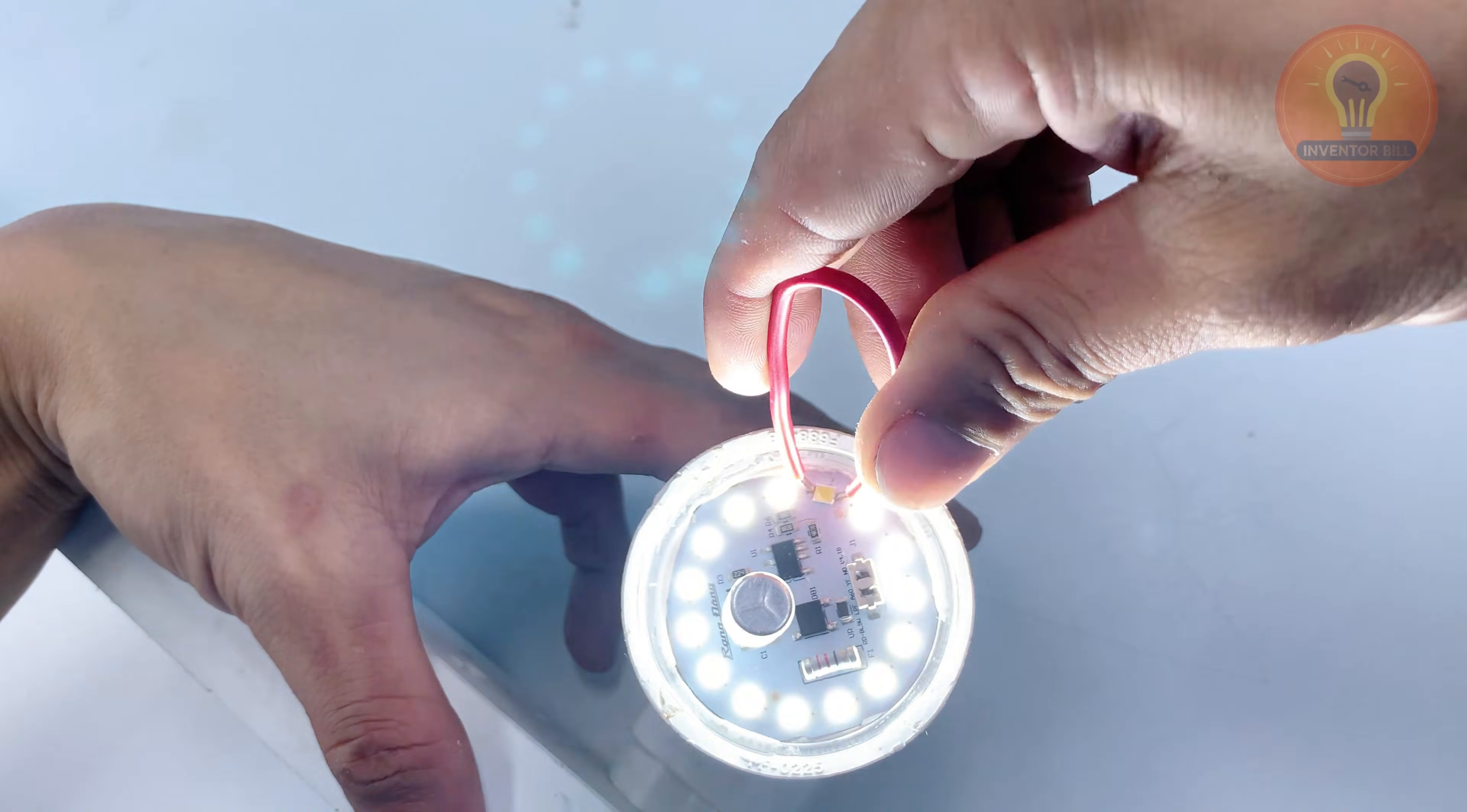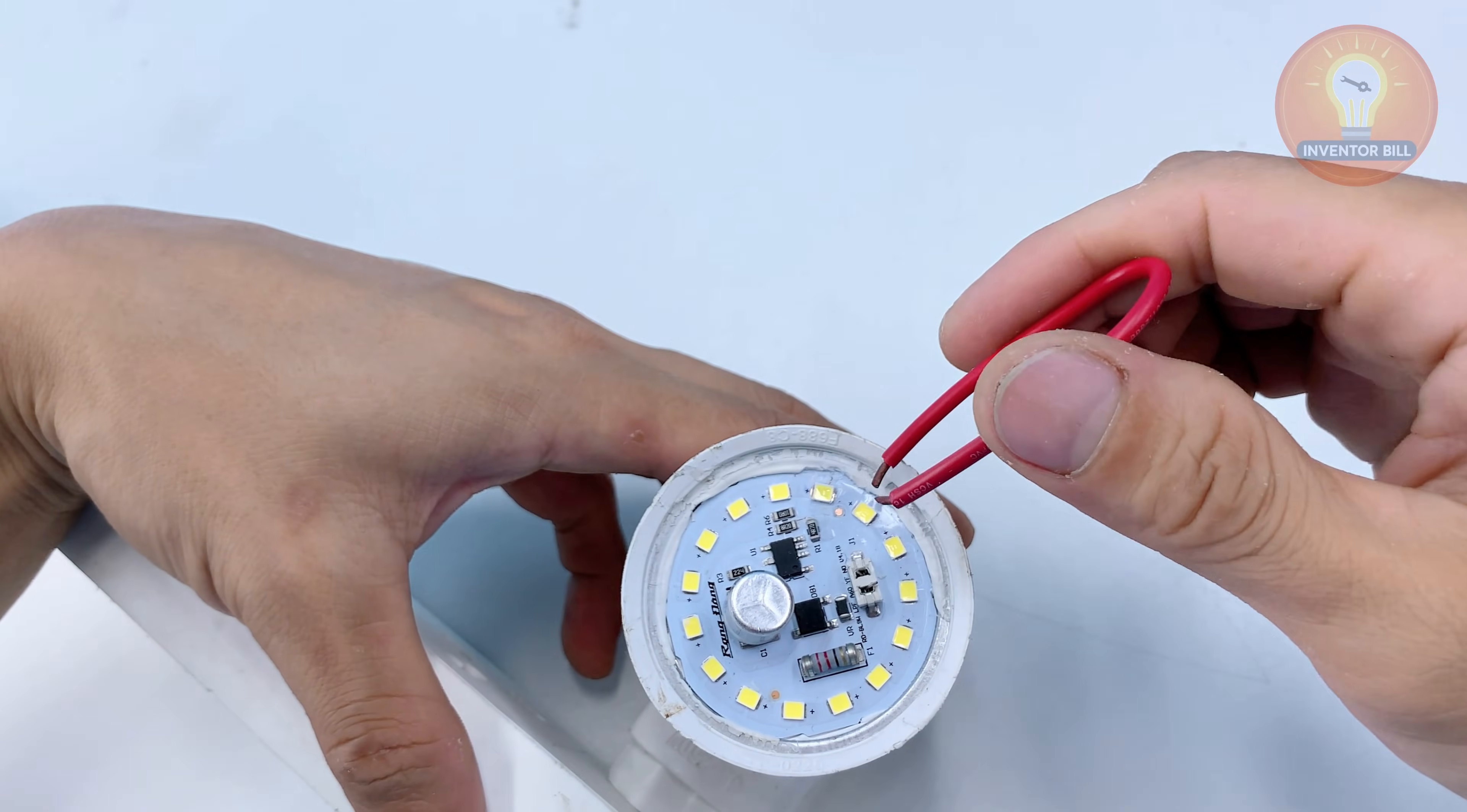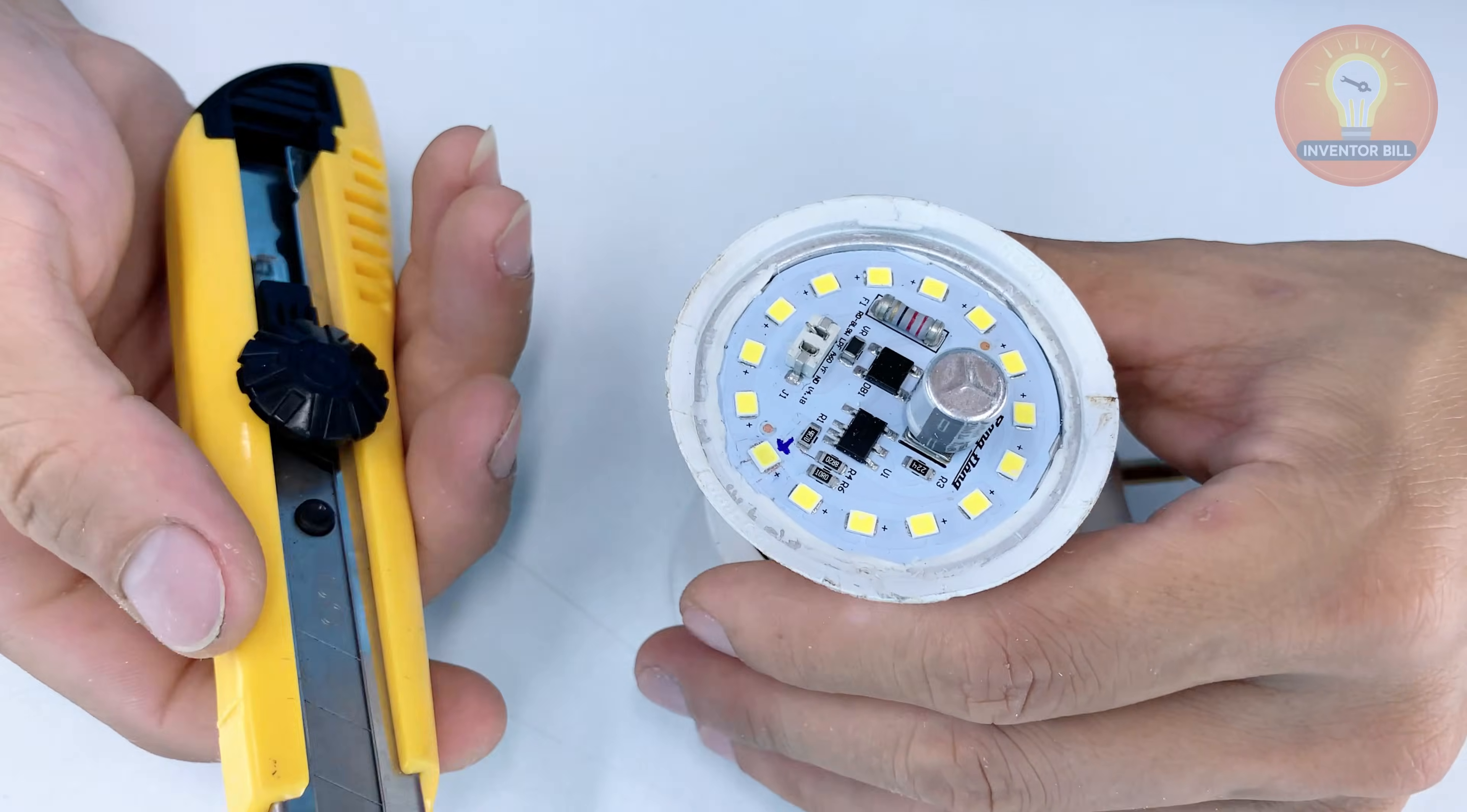Keep your hands dry and stay clear of exposed contacts because you are working with live current. When you touch the bad LED, the rest of the board will light up for a moment. That tells you exactly which chip has failed. Mark that spot, unplug the board, and scrape the damaged LED off the surface with the tip of your knife.